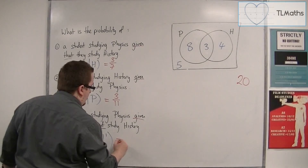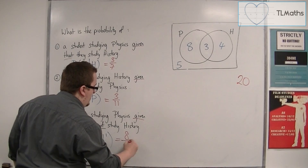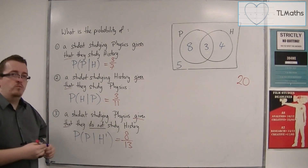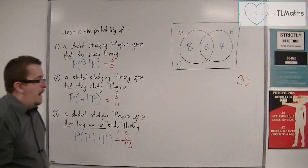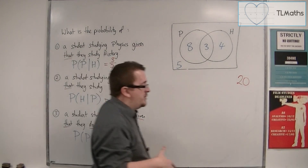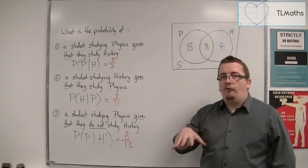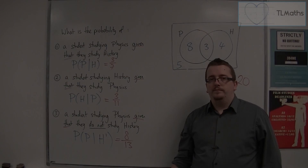And that is how we can use a Venn diagram with conditional probability. We're going to introduce conditional probability more formally in the next video.